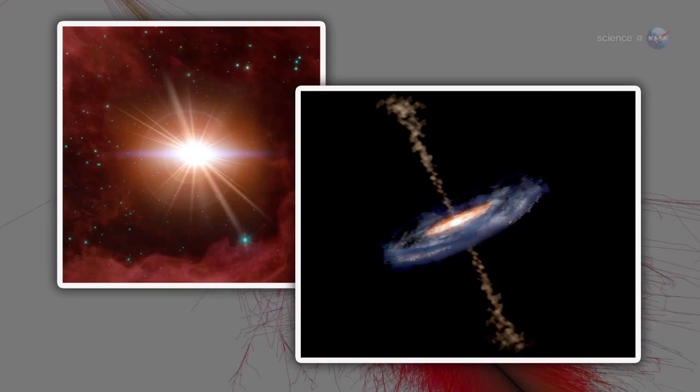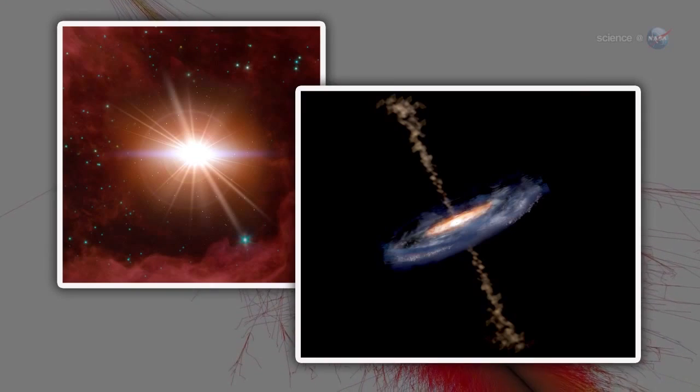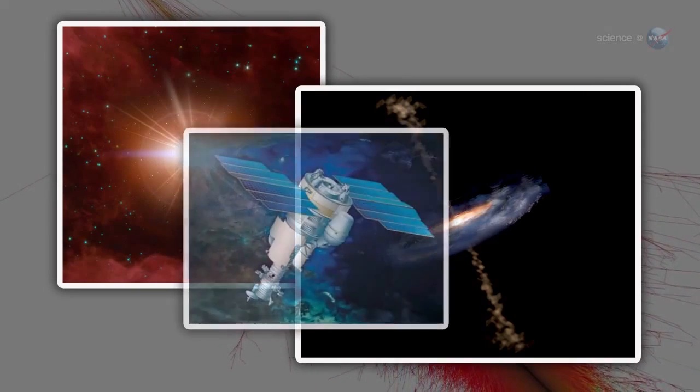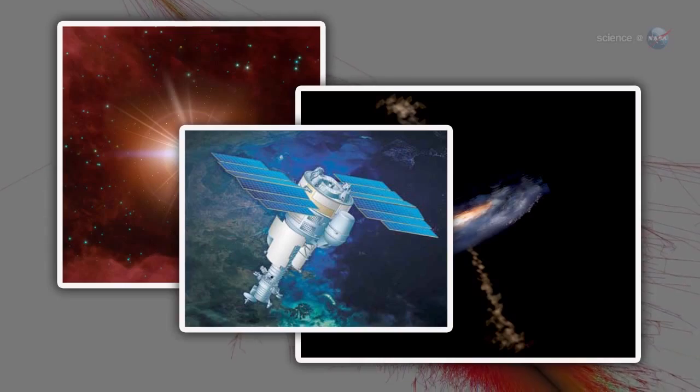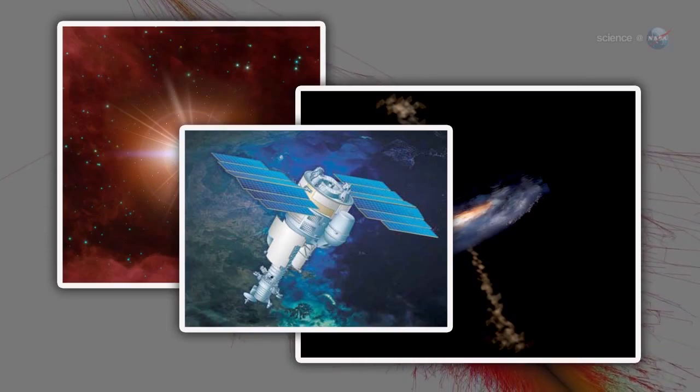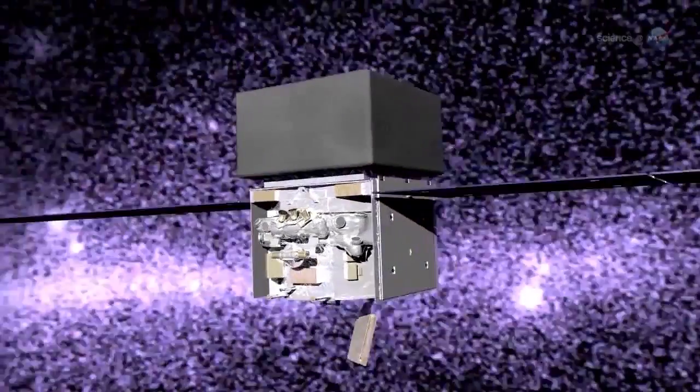Researchers have long thought that cosmic rays contain a sprinkling of antimatter. Italy's PAMELA satellite detected high-energy positrons in 2009, and NASA's Fermi Gamma Ray Observatory confirmed the find two years later.